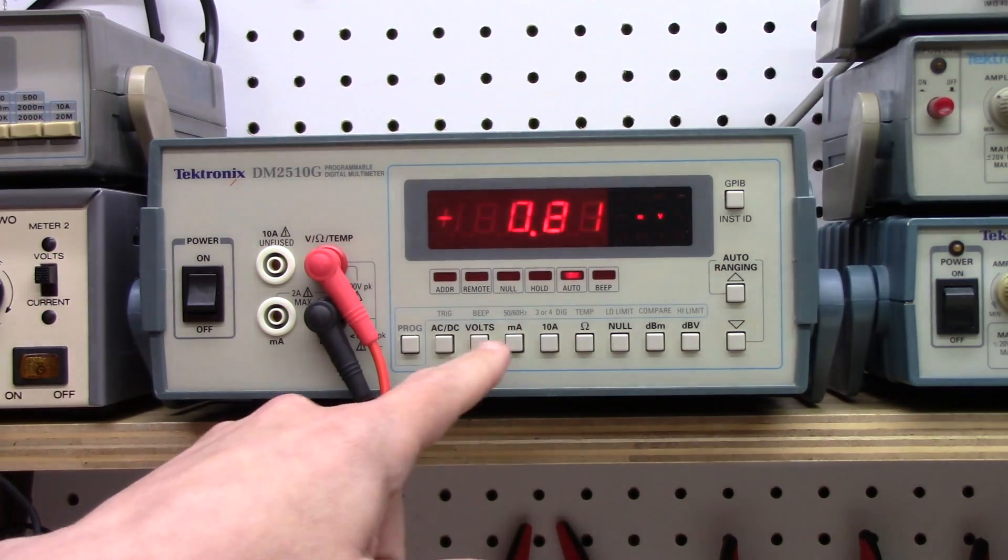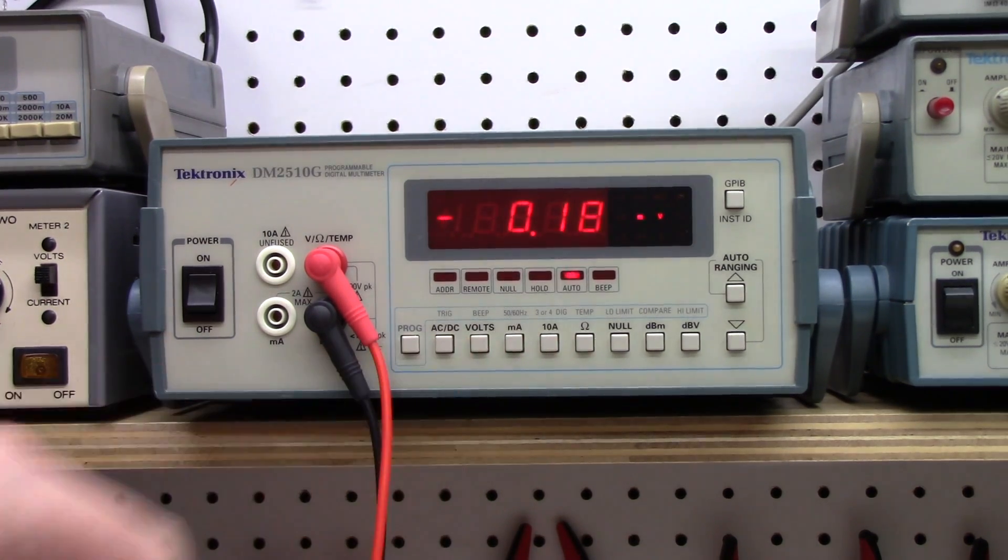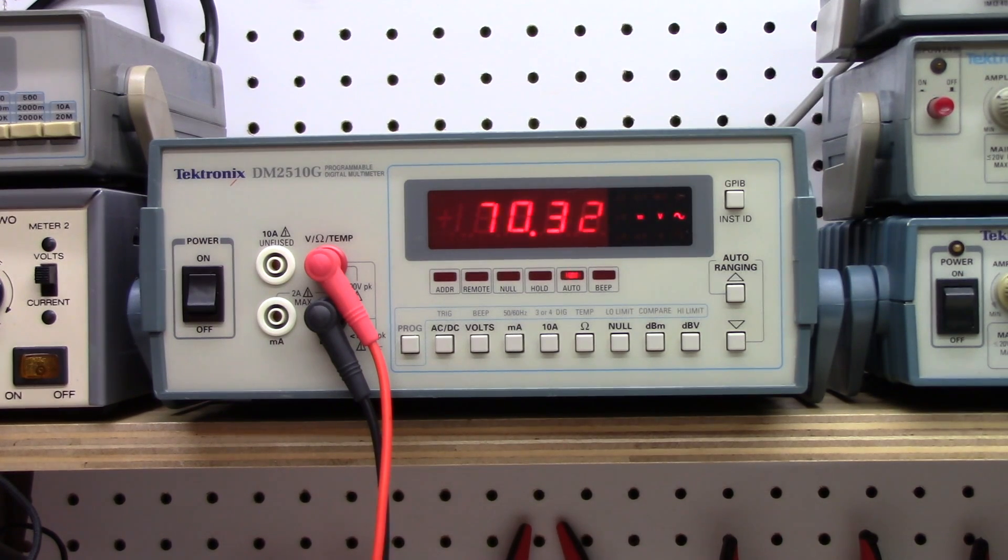Let's go to AC. Now this will supply a square wave output that has 5 volts RMS value, and you see that we get, again, just bang on right on the nose, 5 volts. And so this is a true RMS meter. Interesting that it doesn't have true RMS plastered all over it like most multimeters do now, but it's true RMS, so that's good.